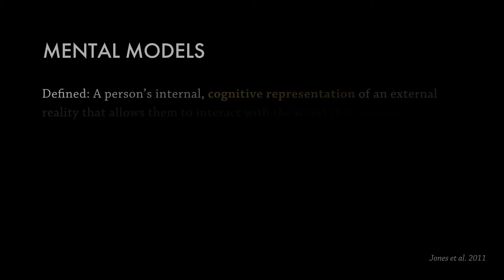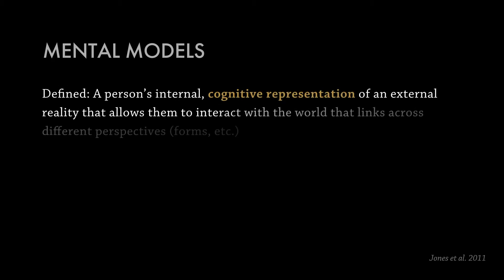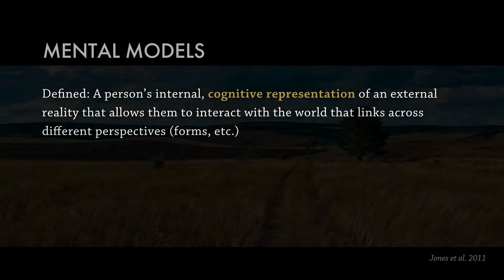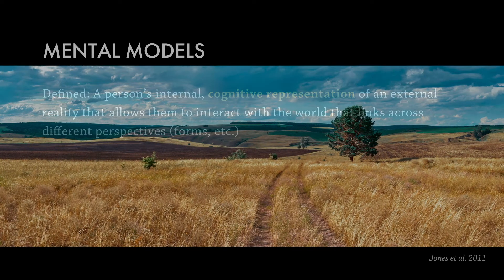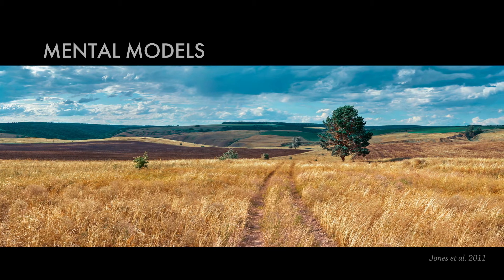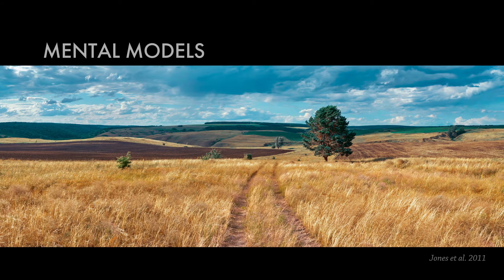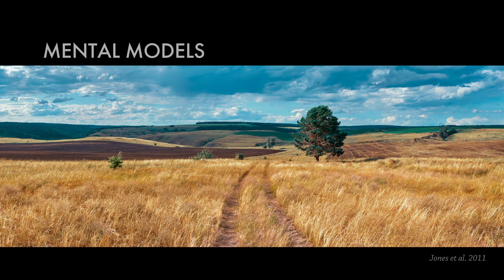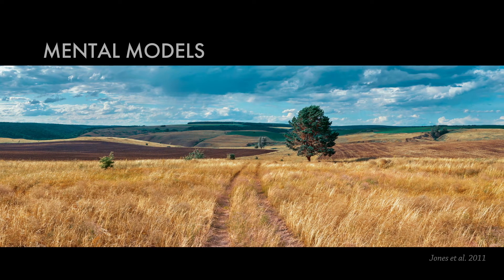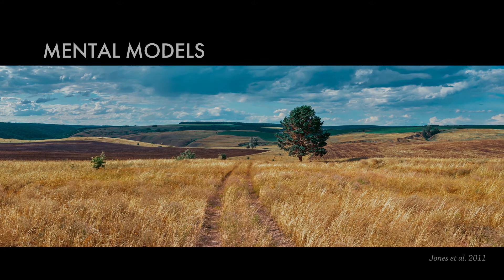There are many definitions of mental models floating around. This one makes the most sense to me. It comes from a paper by Jones et al. A mental model is a person's internal cognitive representation of an external reality that allows them to interact with the world. It's a model you create in your head of the things that you observe in reality. As you're looking out on a landscape or some phenomena, your eyes are absorbing data from all over the place, but you don't mentally process all that data — your brain creates a model based on your prior experience.